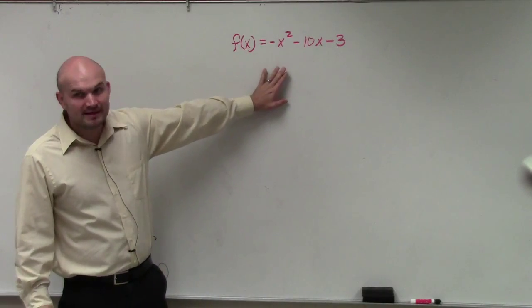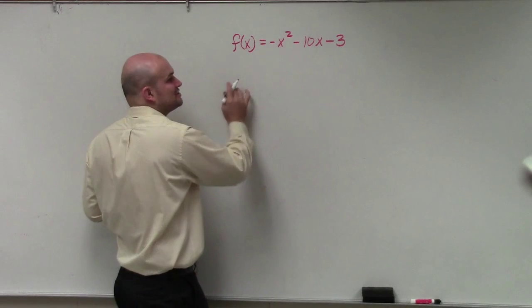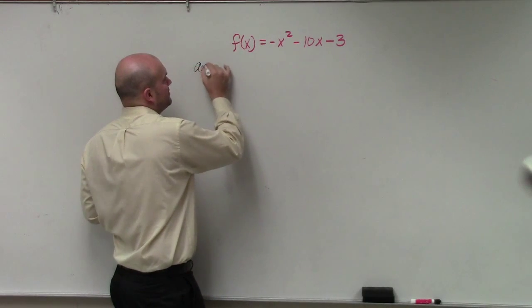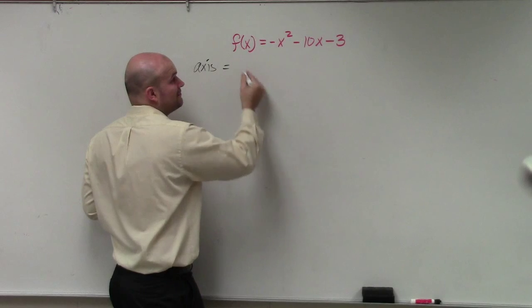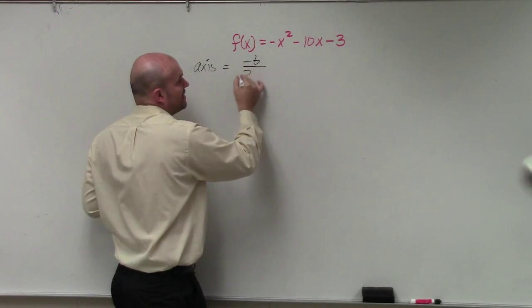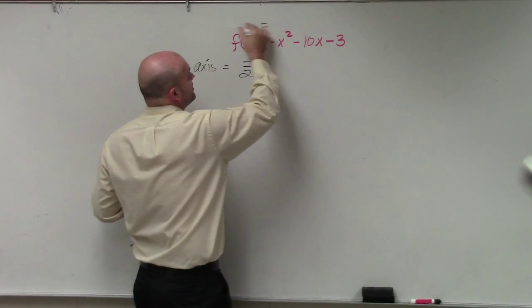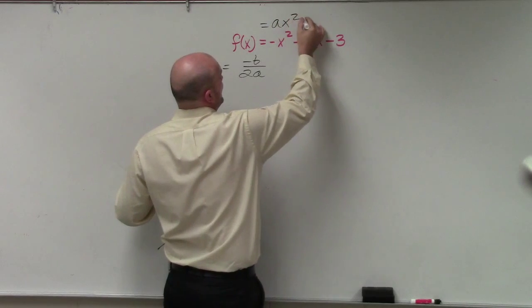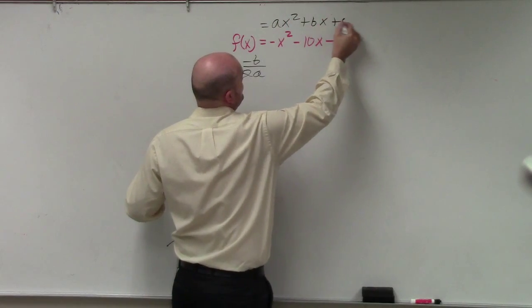However, another method that we can use is basically just to find the axis of symmetry. If you remember, our new formula that I wrote down for you is opposite of b divided by 2 times a. Now remember, standard form is ax squared plus bx plus c.